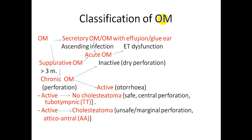Classification of otitis media: otitis media is either suppurative or non-suppurative. The non-suppurative form is also named secretory otitis media, otitis media with effusion, or glue ear. Suppurative otitis media is subdivided into acute or chronic. If otitis media persists more than three months and there is a perforation of the tympanic membrane, it is chronic suppurative otitis media, subdivided into active chronic suppurative otitis media with persistent otorrhea, and inactive when there is only a dry perforation with no otorrhea.